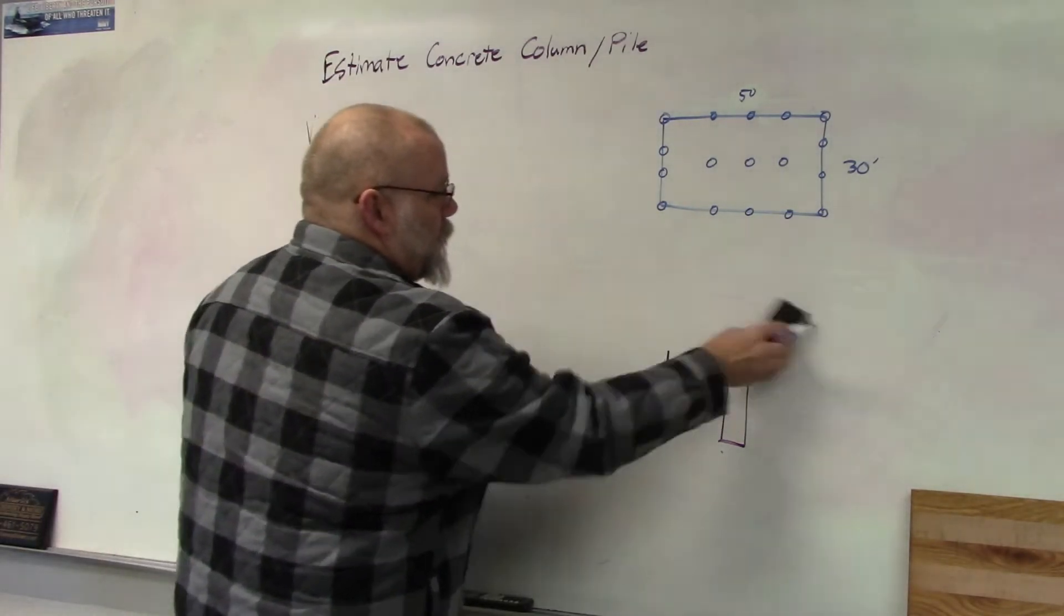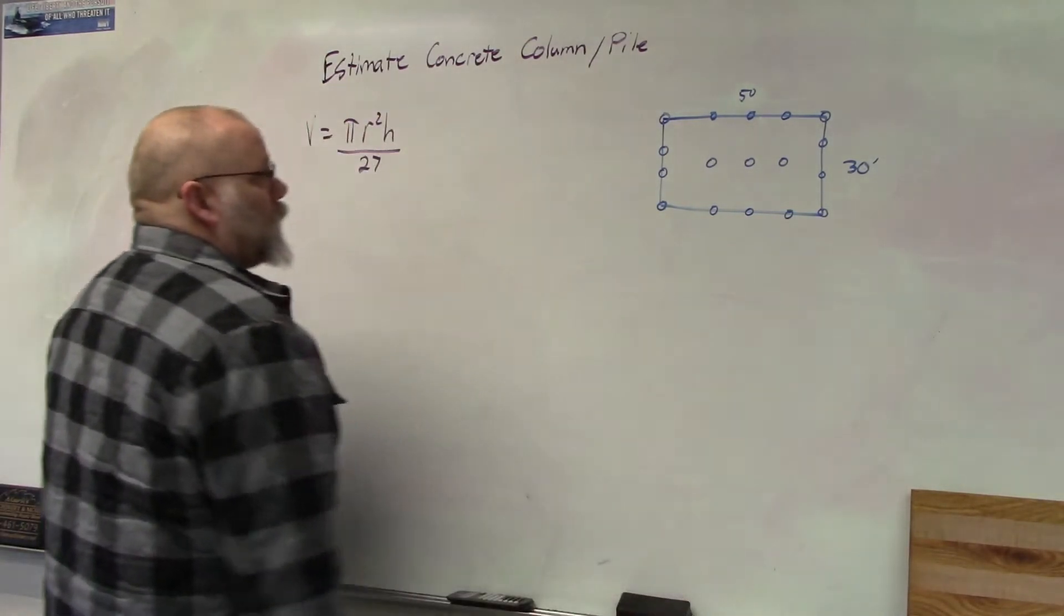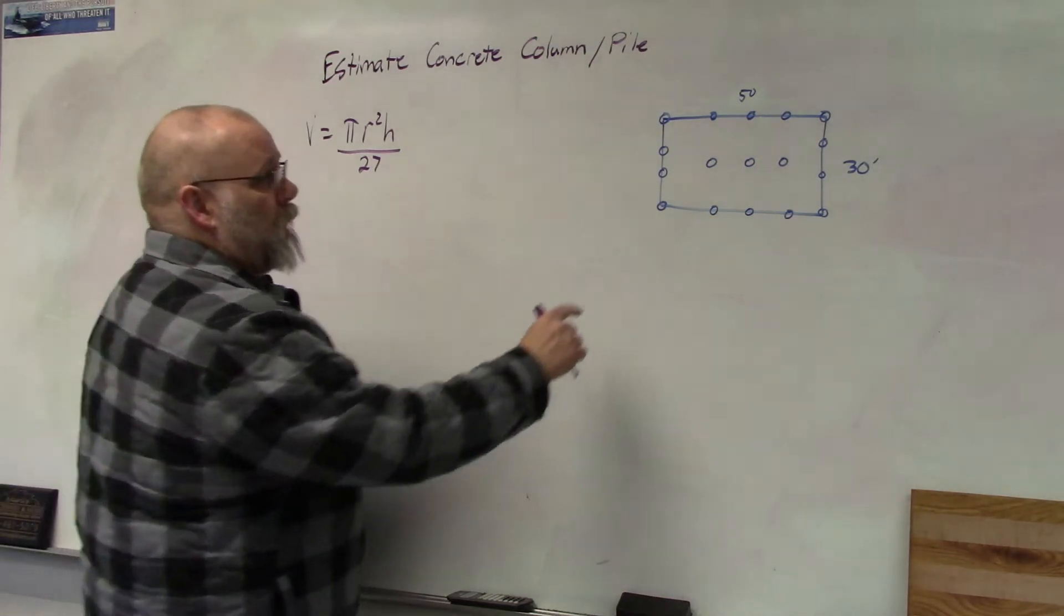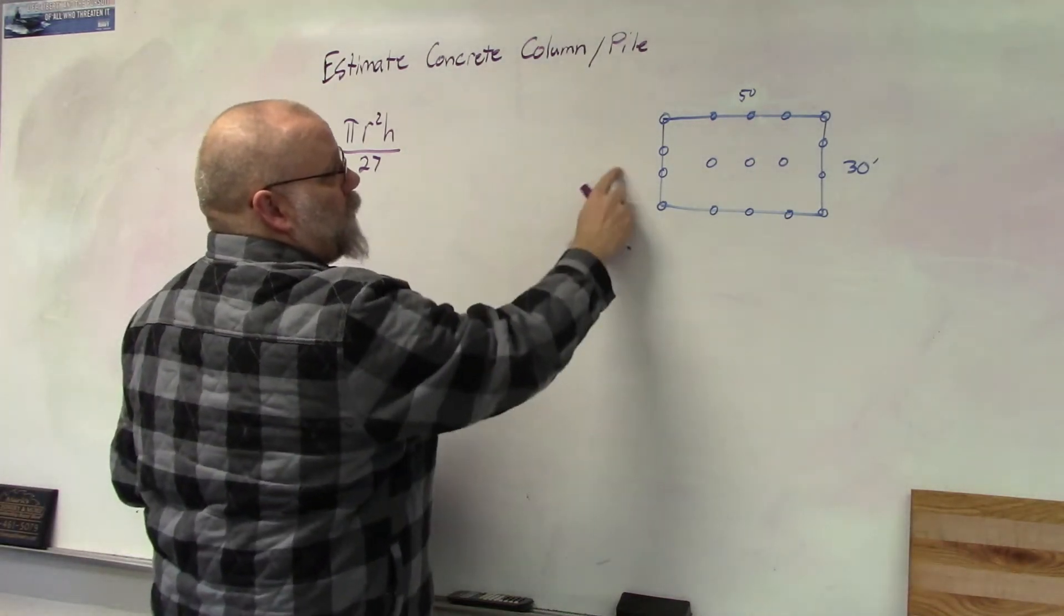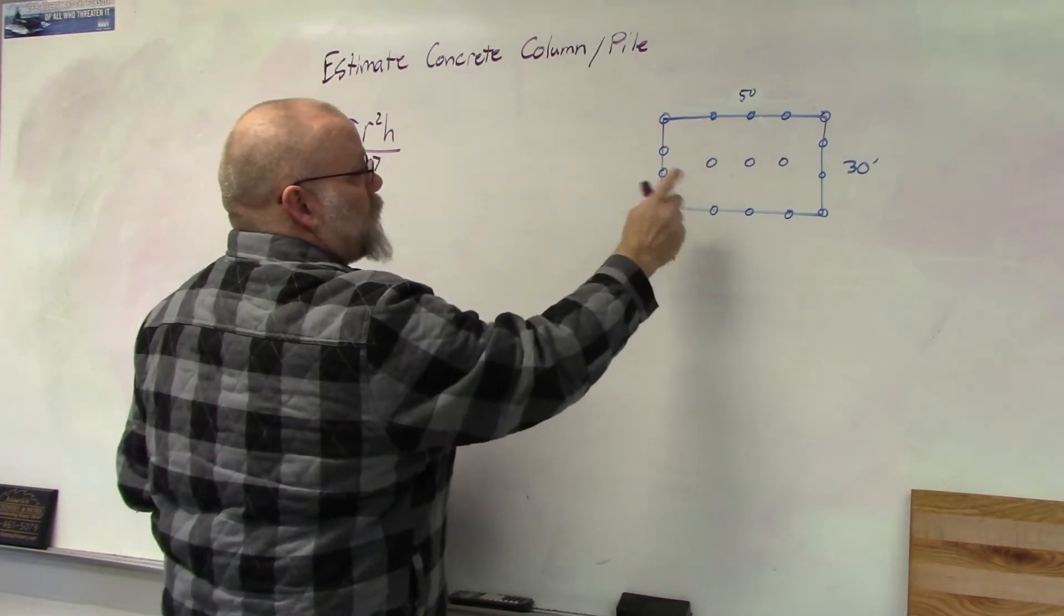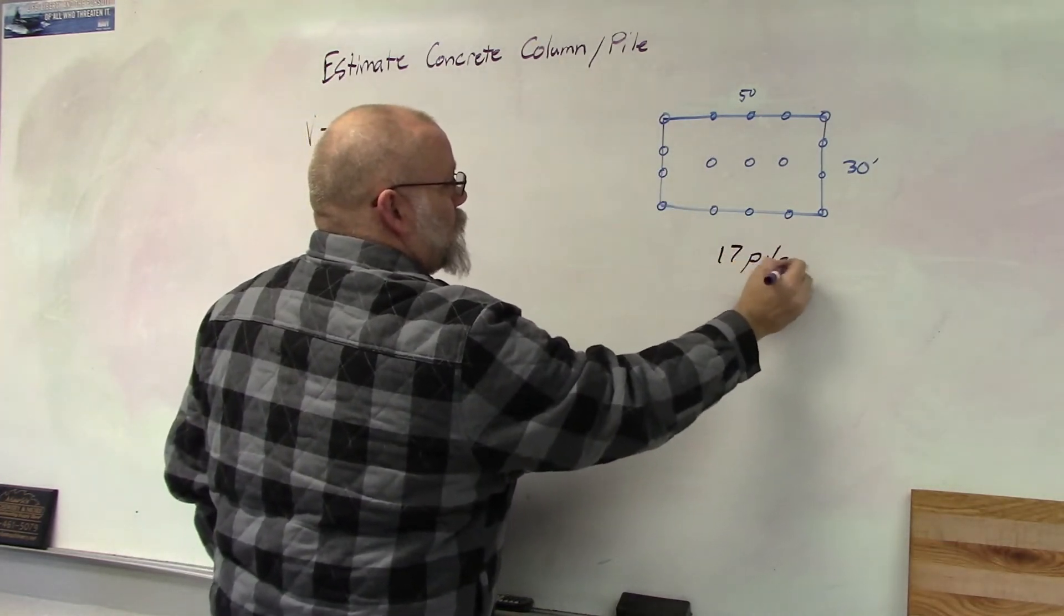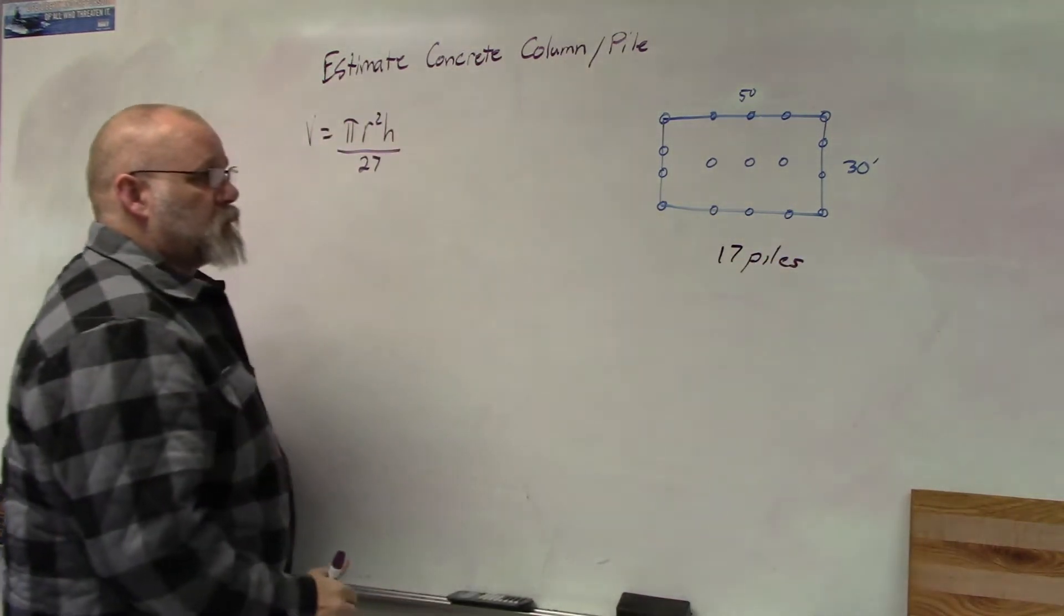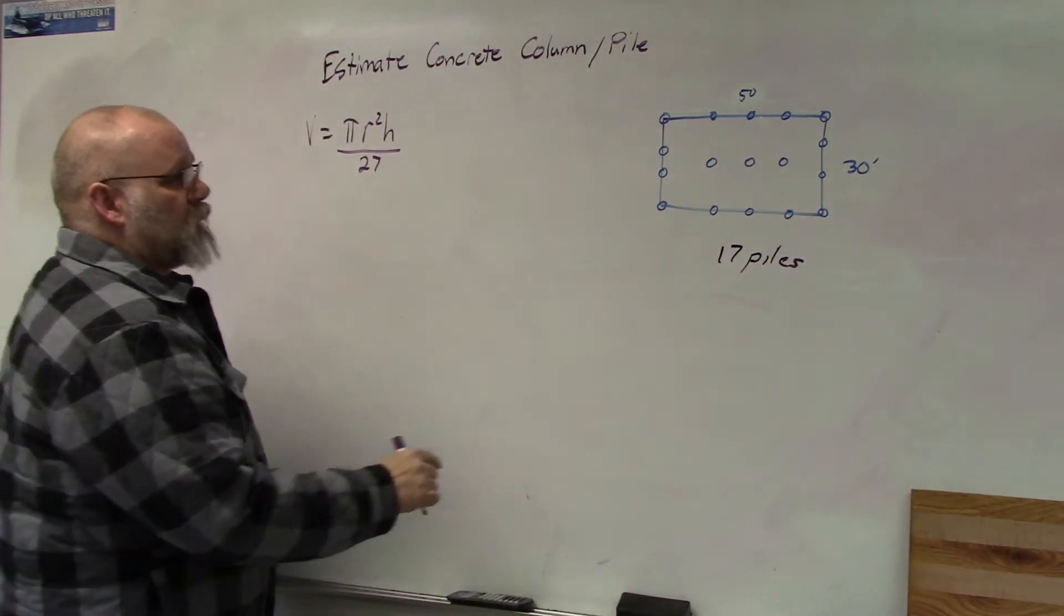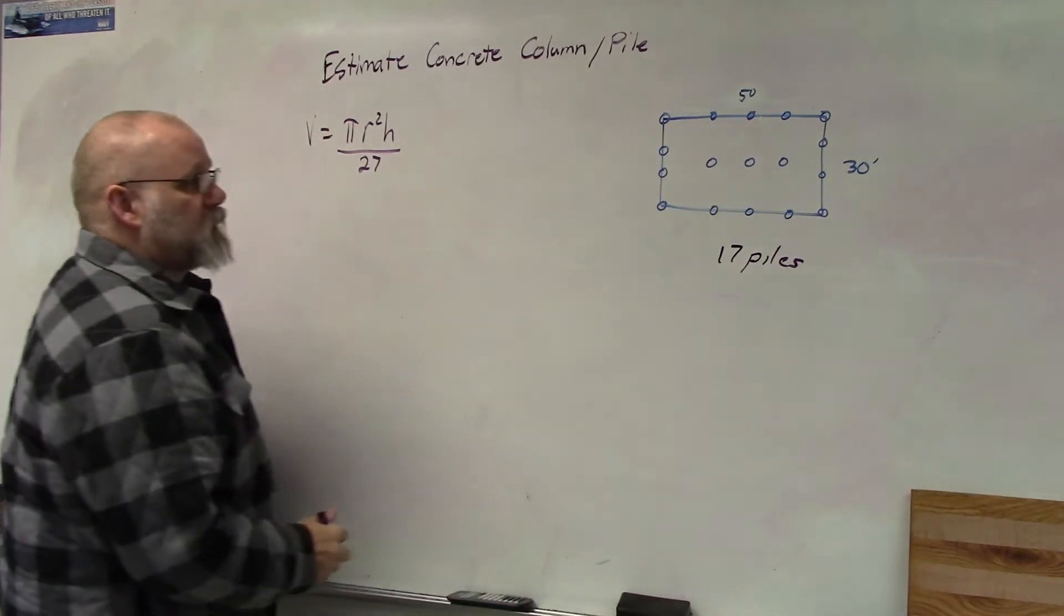So what we're going to do is we have 5, 10, 11, 12, 13, 14, 15, we have 17 piles or columns to pour. So we're going to figure it out for one and then multiply it times 17.